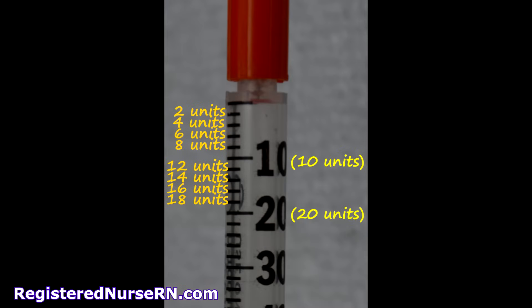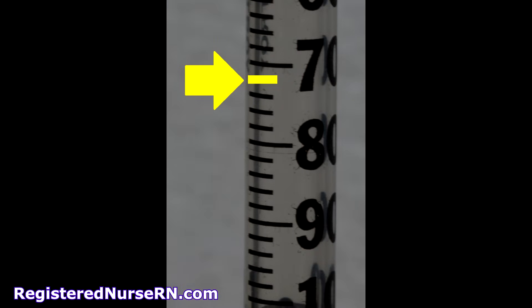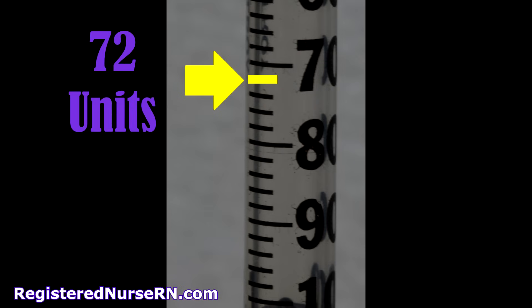This is our last syringe — one you will use a lot when giving diabetics insulin. It holds a total of 100 units, because insulin is measured in units. It looks similar to our 1 mL syringe, but it's not measured in mLs — it's measured in units. The top line is 0, and it measures in increments of 2: so 2 units, 4, 6, 8, 10, and onward to a total of 100 units. Based on the yellow line, the answer is 72 units.